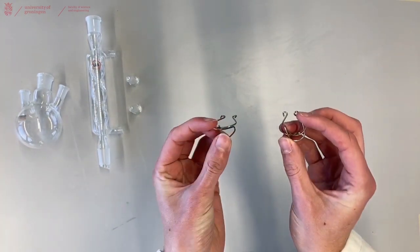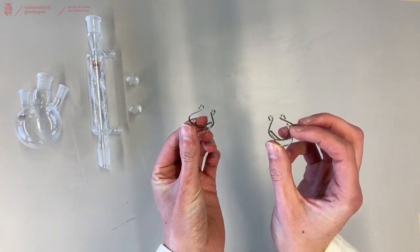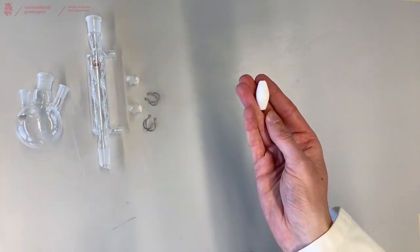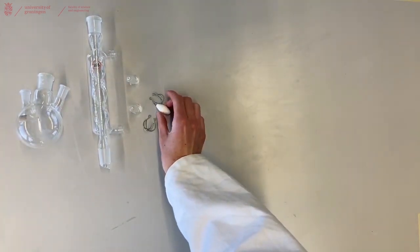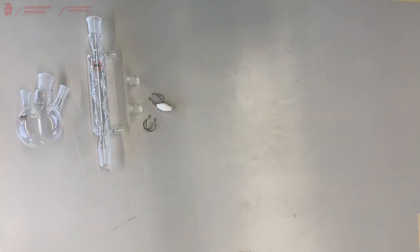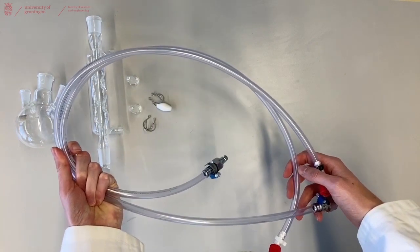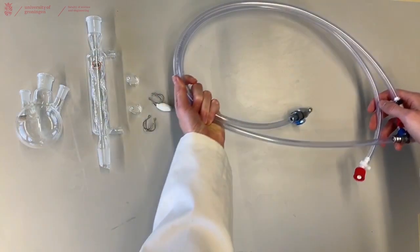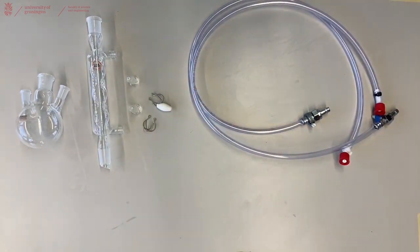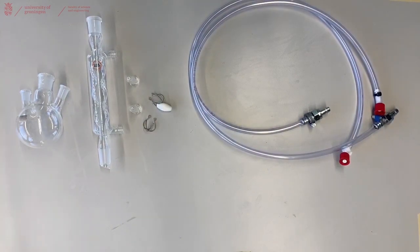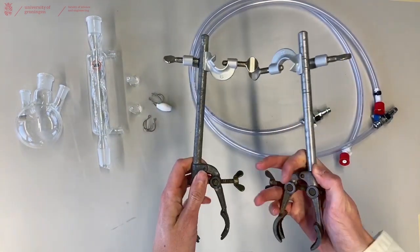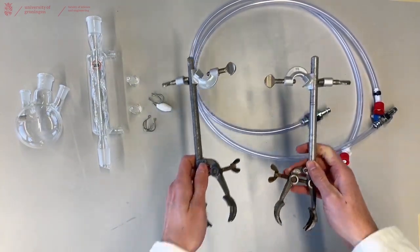You'll need two metal clamps to attach the stoppers to your three neck flask, a stirring bar to stir your solution, two water hoses to connect your condenser to the water, and two metal clamps to connect your glassware to your fume hood.